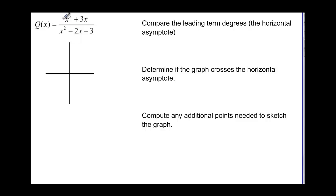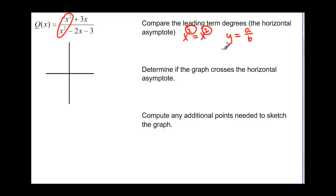We're trying to find the horizontal asymptote, and this time the degrees are equal — x² equals x². When the degrees are the same, it's going to be y = a/b. In our case it's y = 1/1, or just y = 1. So our horizontal asymptote is at y = 1. Let's draw that in with a dotted line.